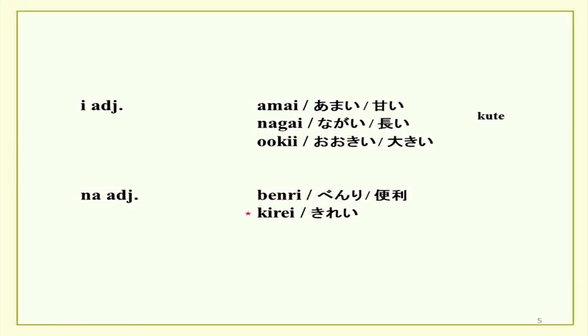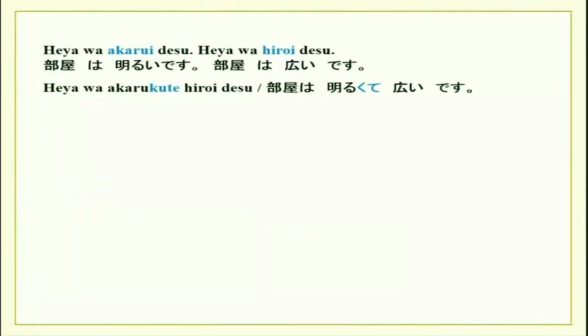We have learnt te form for adjectives — joining two adjectives with kute, which is used for i-adjectives. For example, heya wa akarui desu and heya wa hiroi desu. To join these two sentences, you remove the i of the adjective and add kute, giving heya wa akarukute hiroi desu — one sentence made from two.